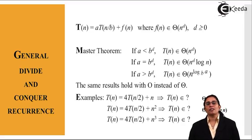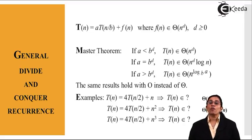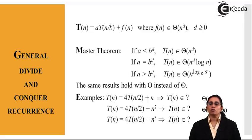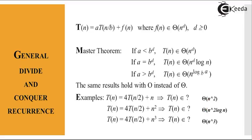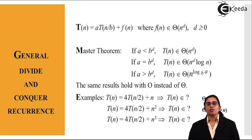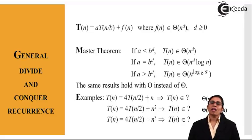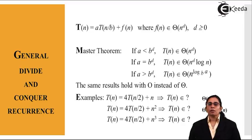For Example 3: the equation 4T(n/2) + n^3 — here a = 4 and b^d = 2^3 = 8, so a < b^d, meaning T(n) belongs to Θ(n^3). This is how equations are categorized for various problems when using the general divide and conquer recurrence with the Master's Theorem. Thank you.